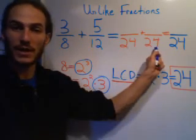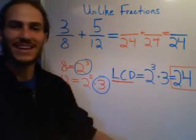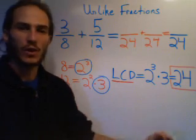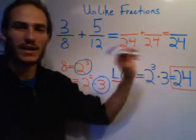once you do get a common denominator, you're only going to then combine the numerators. Don't add those denominators and get 48 here.